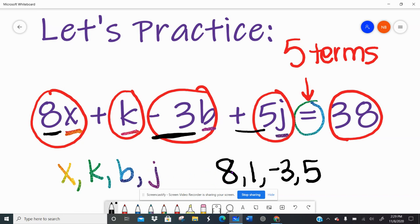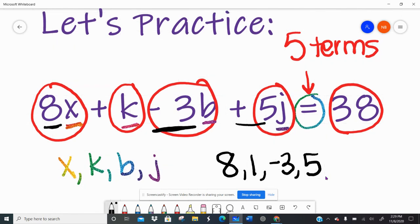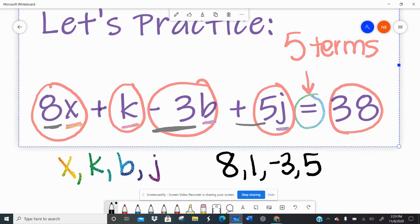For every variable, there has to be a coefficient. For every pilot, there has to be a co-pilot, right? So if there's none listed, we know that it's 1. And we're paying attention to the signs. Plus a number means that's a positive number. Minus that number means really that's a negative number.